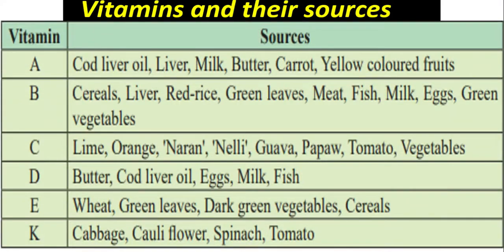Here is the table of vitamins and their sources. The source of vitamin A is cod liver oil, liver, milk, butter, carrot, and yellow-colored fruits. For vitamin B: cereals, red rice, green leaves, and green vegetables. For vitamin C: lime, orange, guava, pepper, and vegetables.